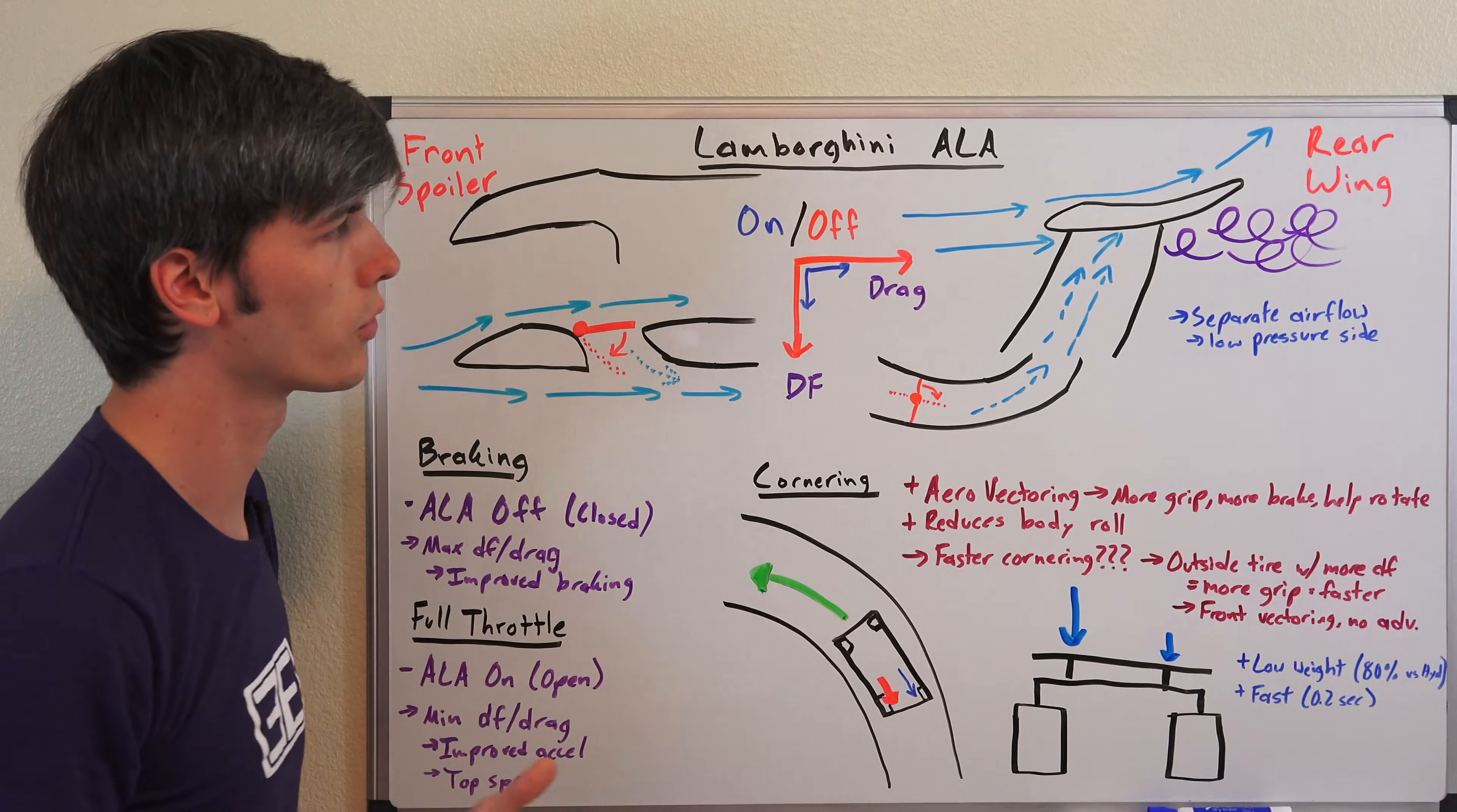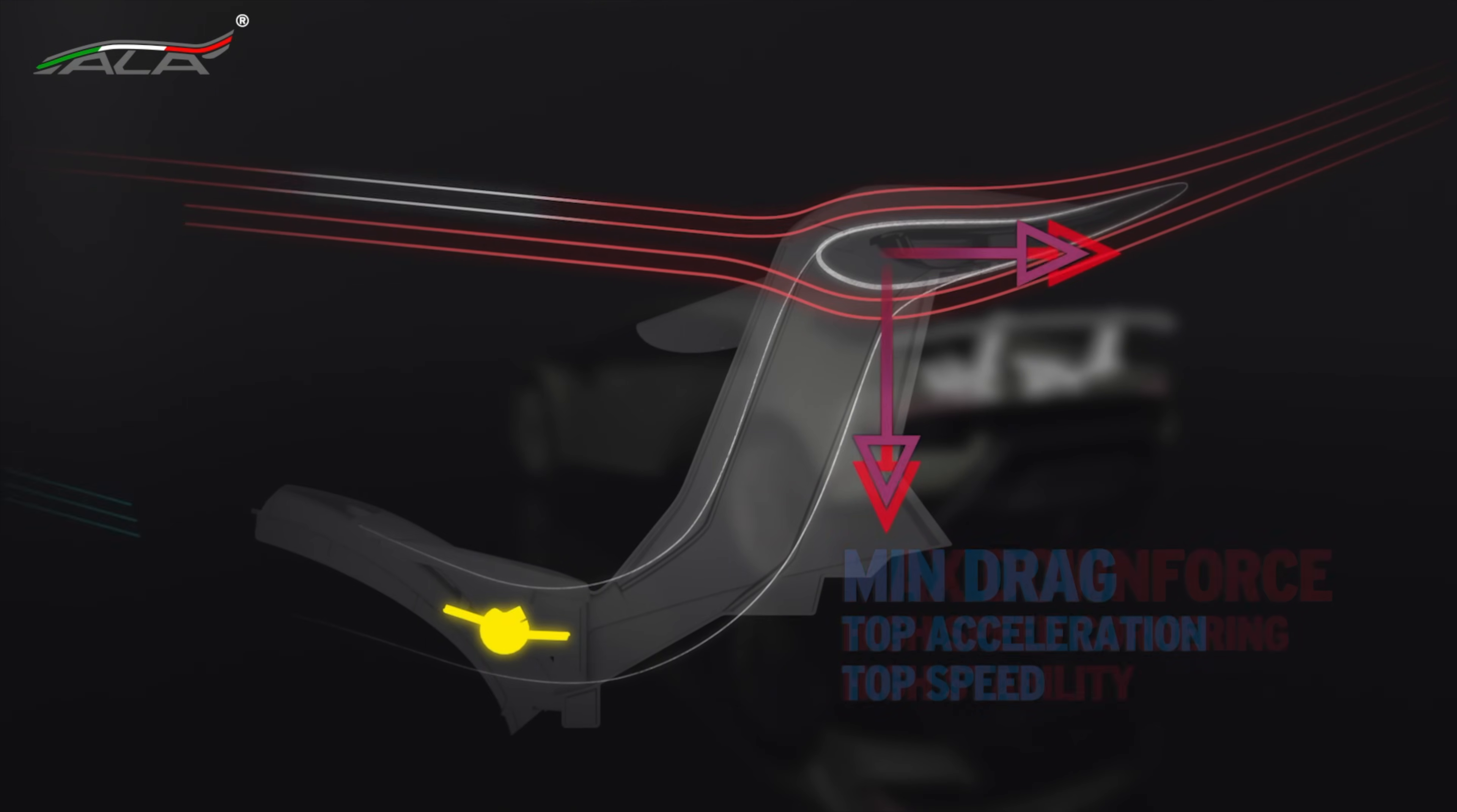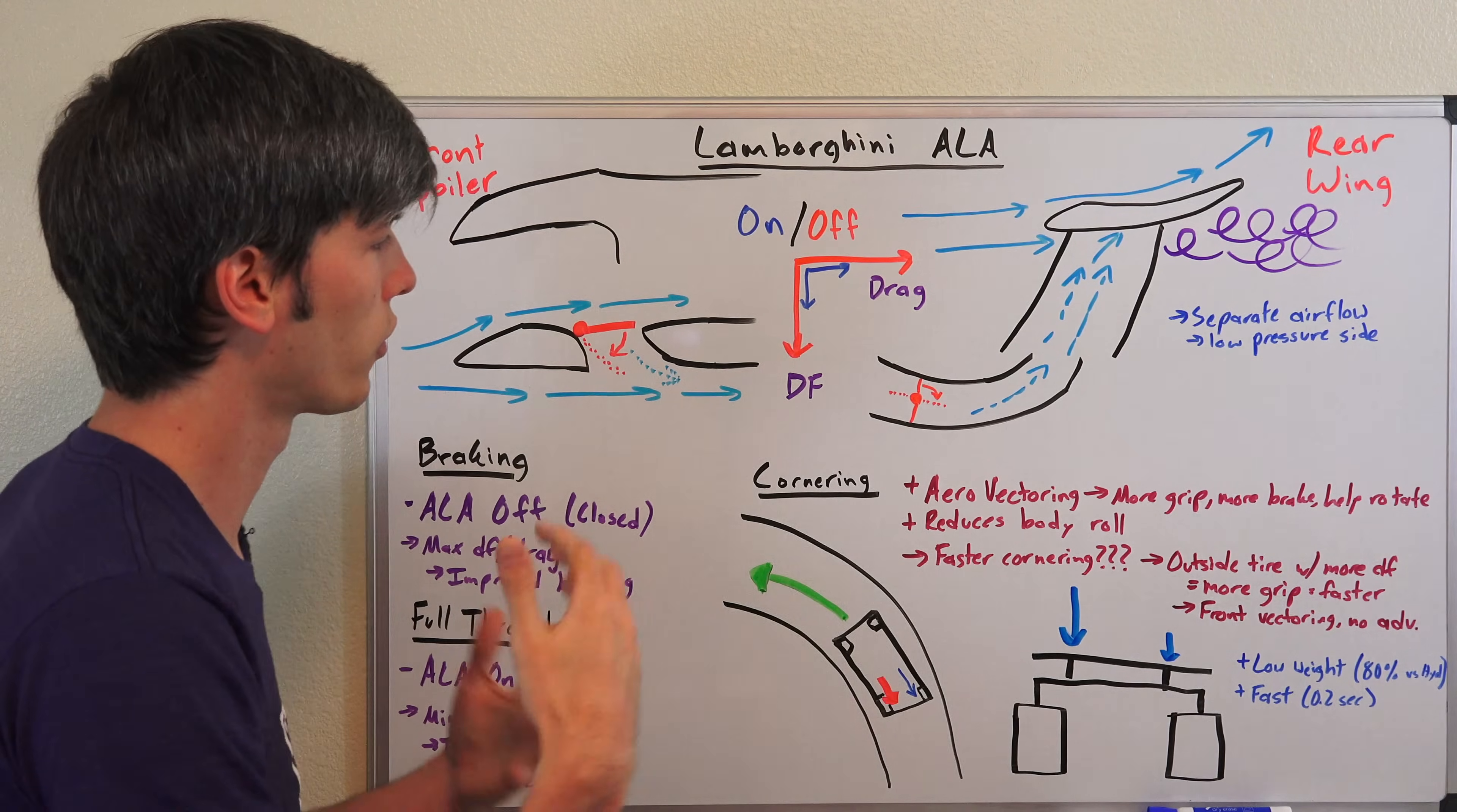So when you open this valve right here, that allows the airflow to interfere with the smooth airflow underneath the wing. By separating that airflow beneath the wing you're going to disrupt that low pressure side and create turbulent air behind it. Ultimately what you're doing by disrupting that airflow is reducing the amount of downforce it's creating and reducing the amount of drag it's creating.